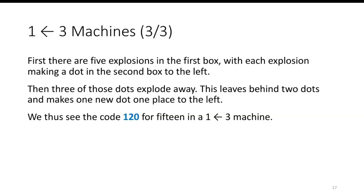Then three of those dots explode away, and this leaves one dot, this leaves behind two dots and makes one new dot to the left. So that's the code 120 for fifteen in a 1←3 machine.